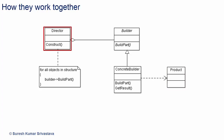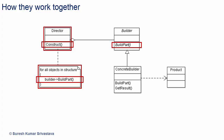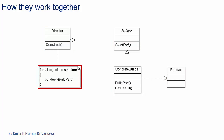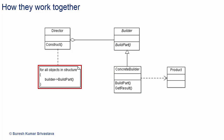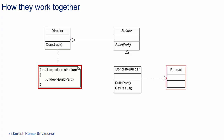Let's see how they work together. The client uses the director and provides the information for the product it wants to create. Director has construction logic based on the provided information and uses the builder interface to create parts of the object. Concrete builder methods create the parts of the object and assemble them for a required product. The builder provides the product to the client through its interface. The construction process is separated from the representation of the object, and the builder interface hides the representation, internal structure, and how the product gets assembled. The same construction process is used to create different representations of the product.